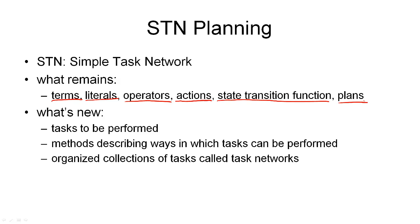But there are a number of new components that we need to consider in task network planning. The first component are the tasks themselves — the things that we want to do in our domain, like going on a holiday, or fixing a car, or learning something on this course. Simple tasks correspond to actions directly, but we often deal with tasks that are more complex. The next new component are the methods that describe ways in which we can do our tasks, usually consisting of subtasks that together achieve a more complex task. These subtasks can be ordered with respect to each other, and thus form a task network.